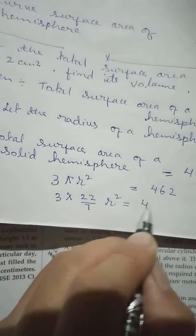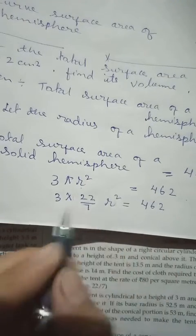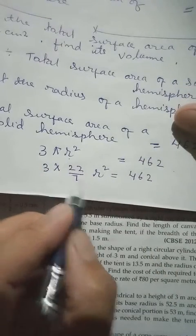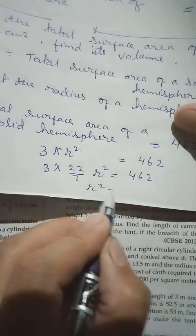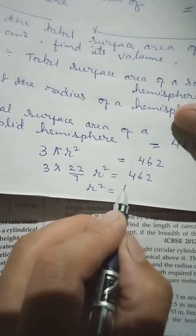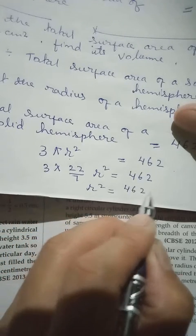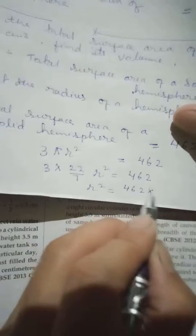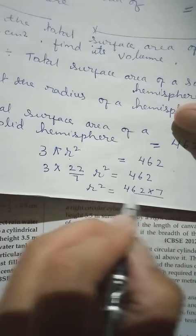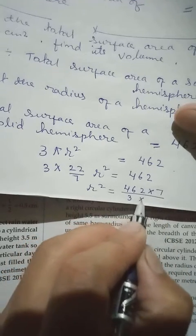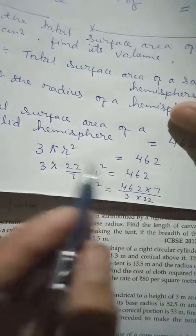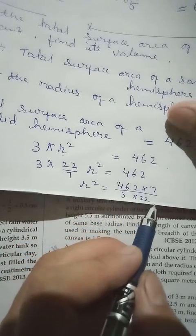In order to get R we will transpose all the sides. So the one which is down, if we transpose to this side it will be up, the one which is up will come down. So it will be r squared equals 462 divided by 3, into 7, divided by 22.